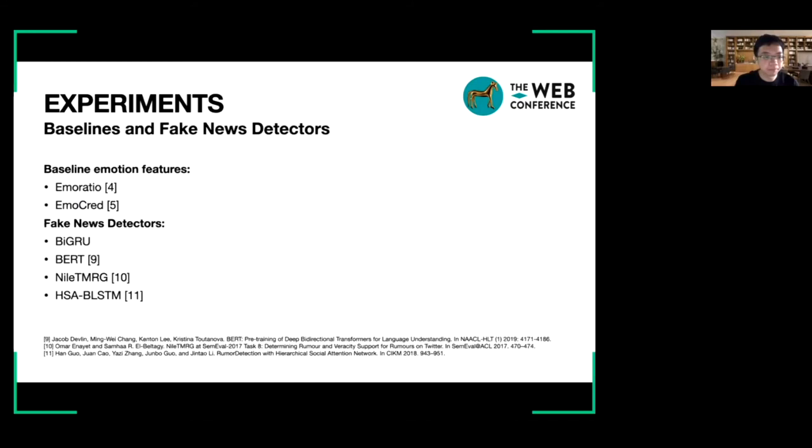In the experiments, we select two baseline emotion features to evaluate the effectiveness of our dual emotion features, EmoCred and EmoRatio. For testing the ability of the emotional features to help the text-based fake news detectors, we select BiGRU, BERT, and other state-of-the-art fake news detectors.